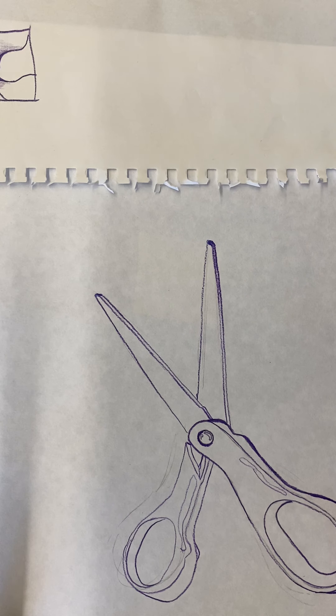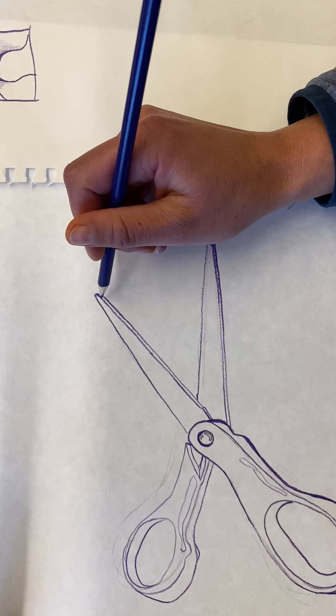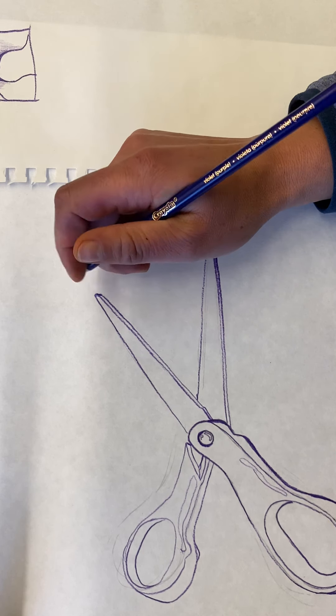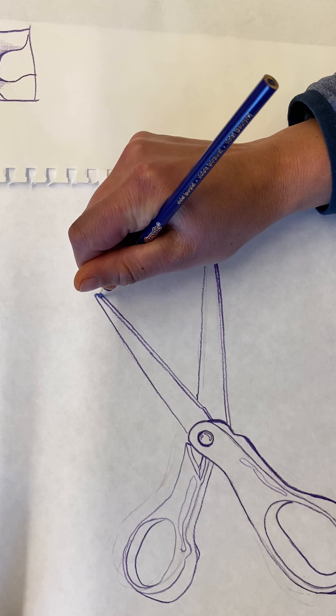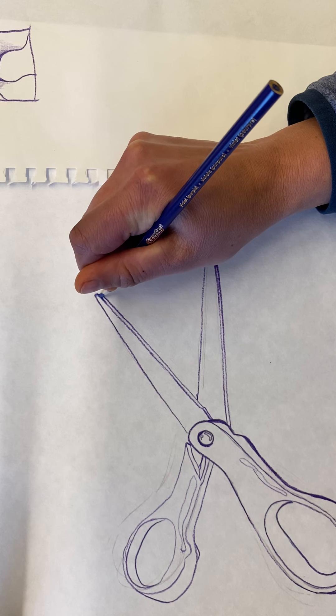try this now with our drawing. I'm going to look at places where the lines intersect and draw that triangle, and then I'm going to create that U shape